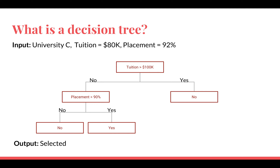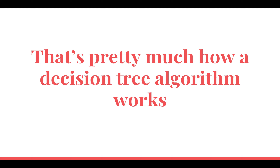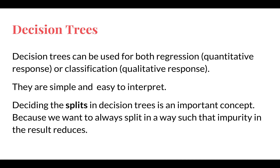This is how a decision tree actually works — there's no other complication to it. If you are doing a simple classification problem, it will ask a series of questions or test a series of conditions one after another until the final output is arrived at. Decision trees can be used for both regression — a quantitative outcome — or classification — a qualitative outcome. The university example was a qualitative response: either selected or not selected, so it was a classification decision tree.